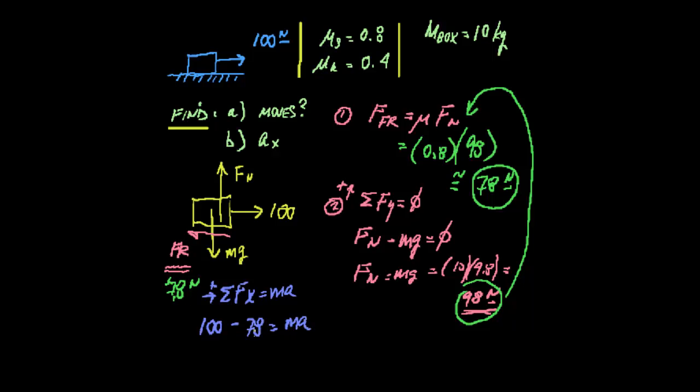Now, this is still static friction, so we have to actually change this over and use kinetic friction. So if I put this in here and recalculate this, because now I know it's going to move, I'm going to come up with 39-ish. That becomes 100 minus 39, because it is moving. It goes into kinetic.